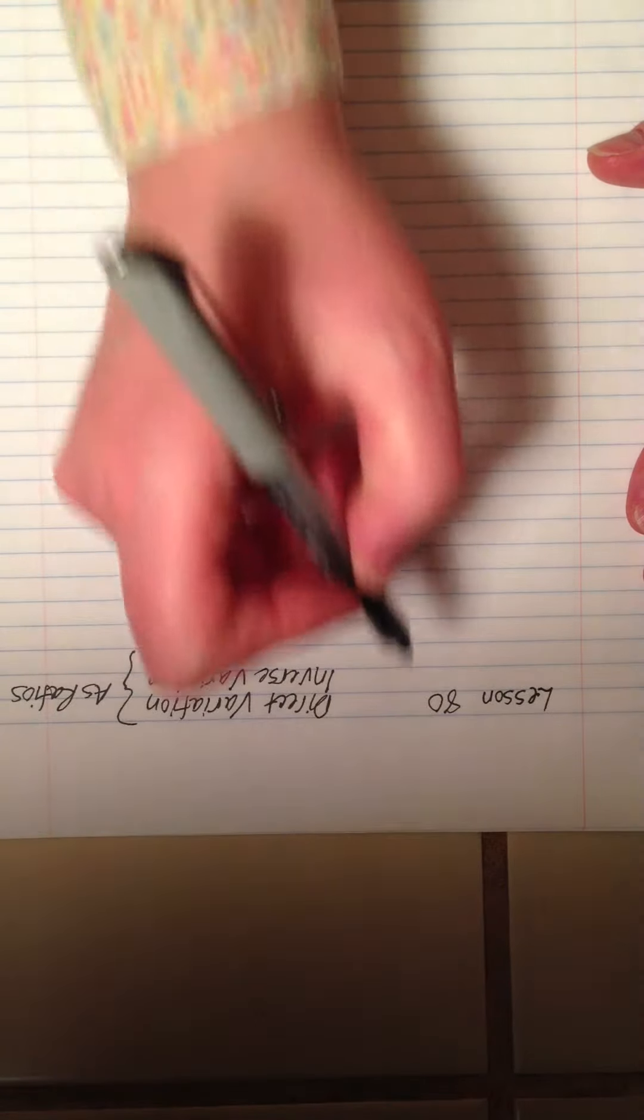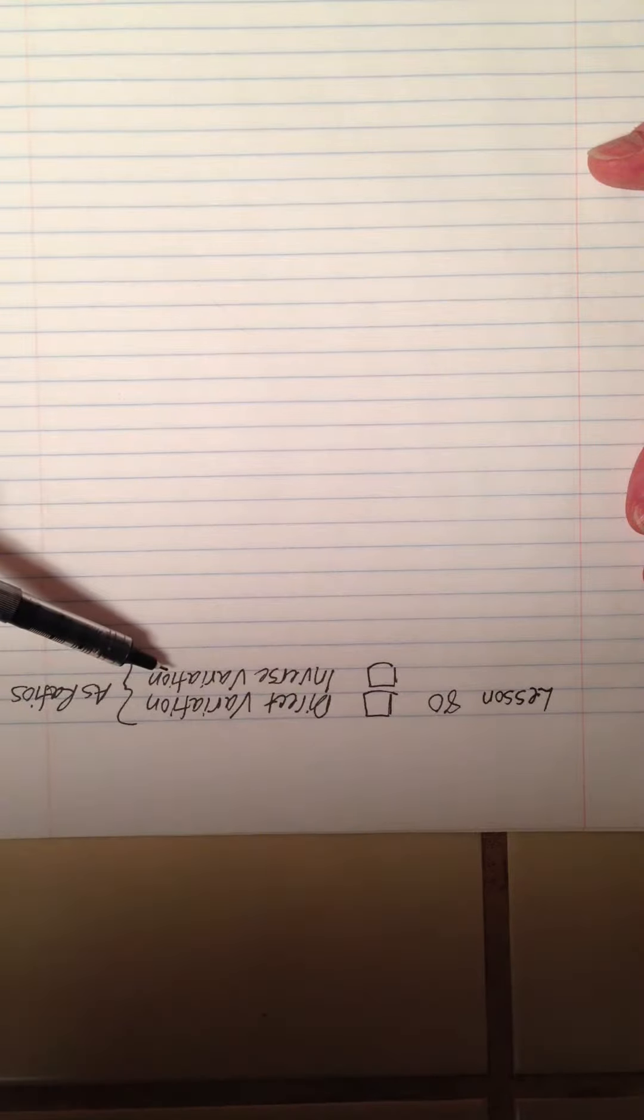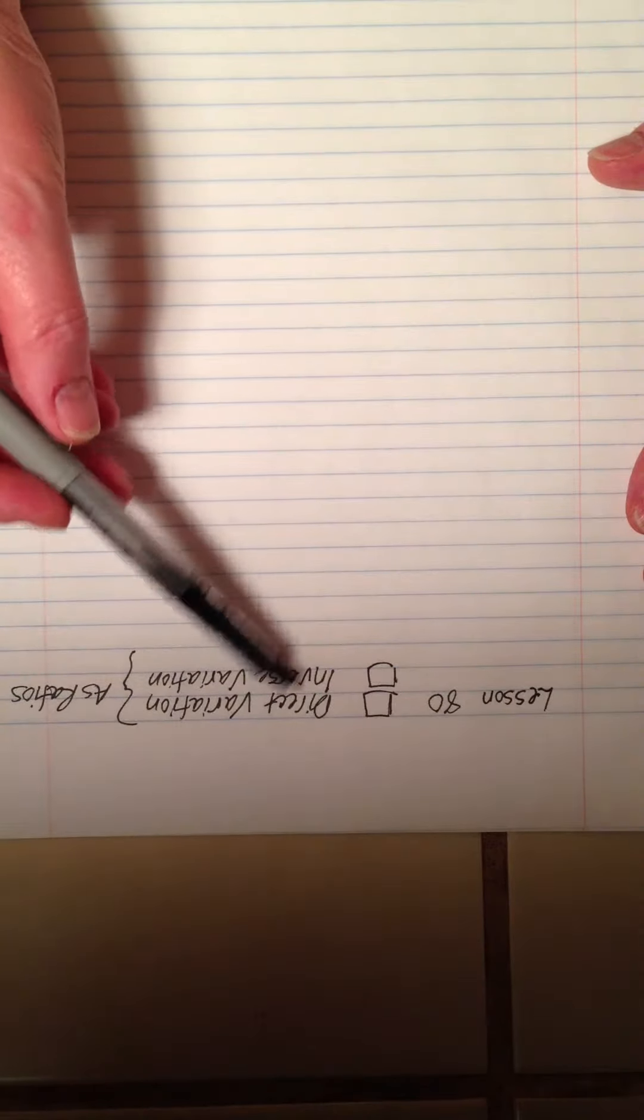Students, welcome to lesson 80. This is kind of a fun little throwback to something that we've done in the past and I'm excited to show it to you. Notice the way I wrote the lesson title here. We're going to talk about direct variation and inverse variation, and remember inverse is just another way of saying indirect.